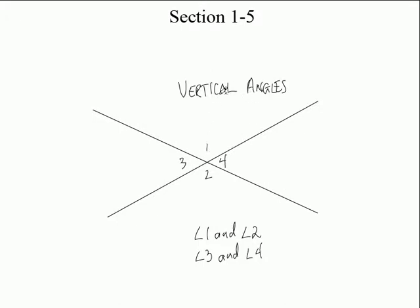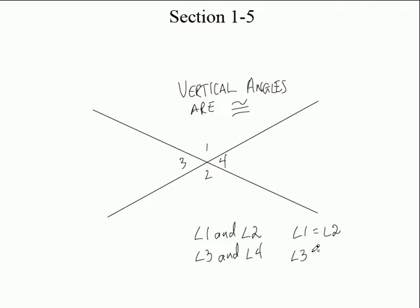Vertical angles are actually congruent to each other — they're equal. So angle one is congruent to angle two, and angle three is congruent to angle four. I use 'congruent' and 'equal' interchangeably. We show this with arc notation: two arcs mean those two angles are equal, and one arc means those two angles are equal. Vertical angles being congruent is something we're going to use a lot.